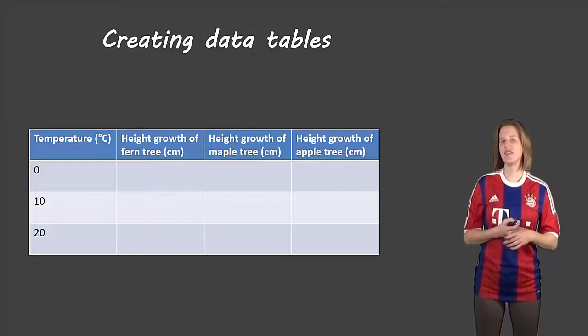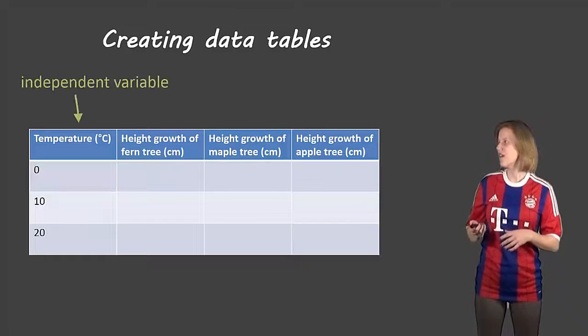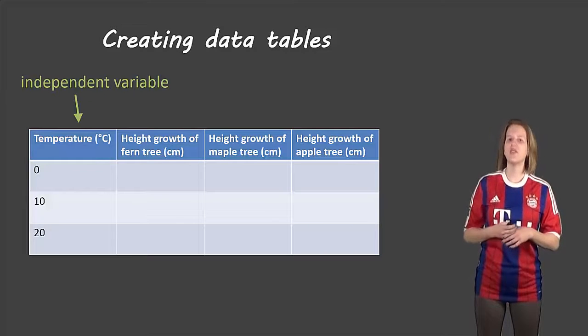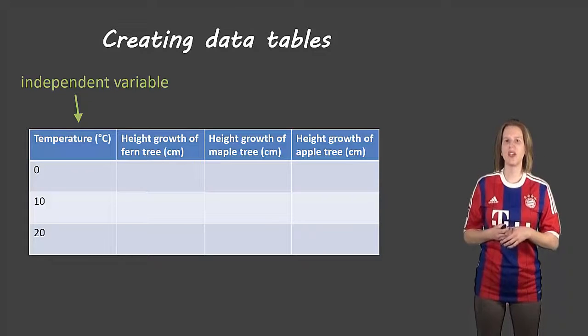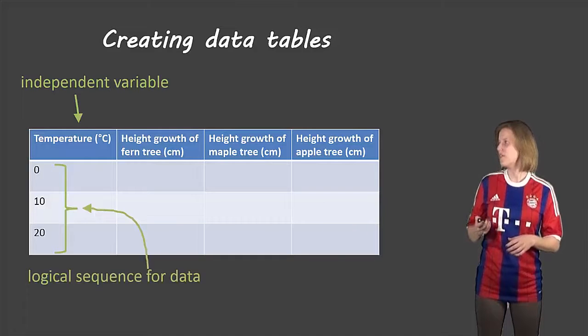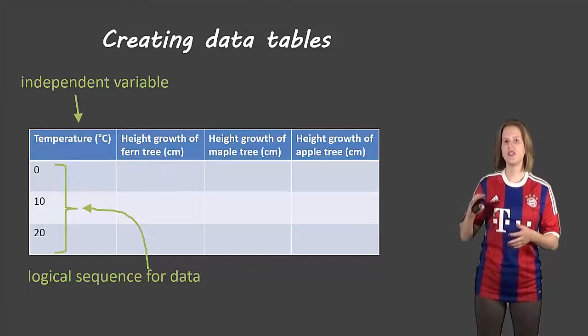So let's take a look at how we actually make our data tables. First thing, the independent variable goes in the first column. If you don't remember what the independent variable is, go back to the video on how to write titles. There's a good overview of the independent variable and dependent variable.